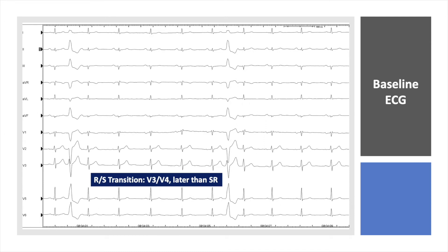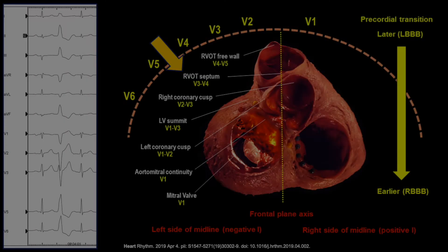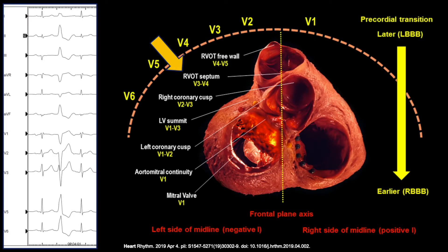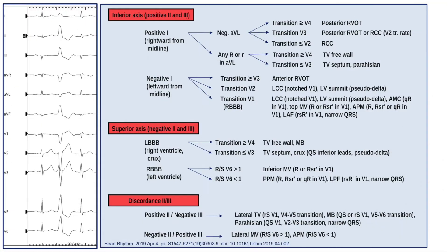The ECG shows frequent monomorphic PVC with left bundle branch block pattern and a RS transition around V3-V4, which is also later than sinus rhythm. This morphology is compatible with the septal region of the right ventricular outflow tract with a transition around V3-V4. This figure and the previous one are from an interesting review article which summarizes the application of ECG for localization of outflow tract.